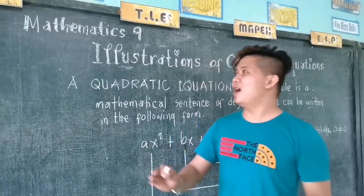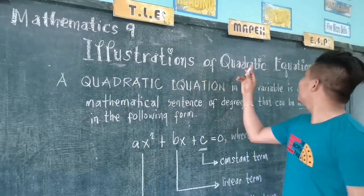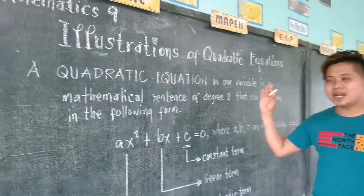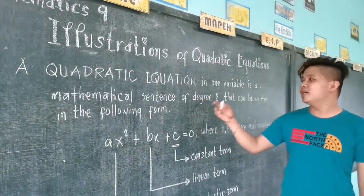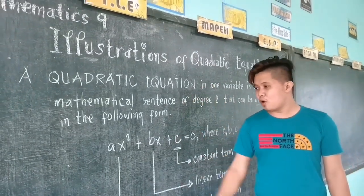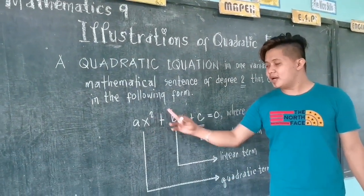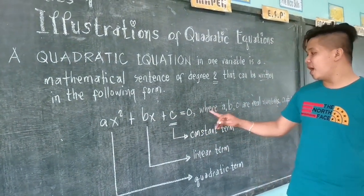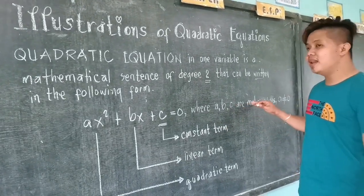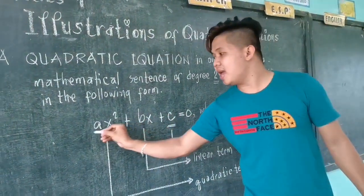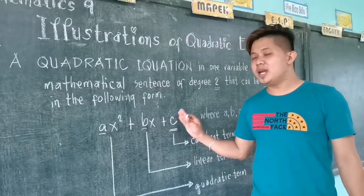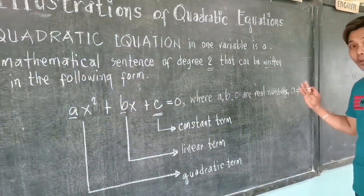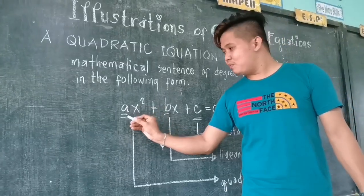Our topic today is all about illustrations of quadratic equations. A quadratic equation in one variable is a mathematical sentence of degree 2 that can be written in the form ax squared plus bx plus c equals zero, where a, b, and c are real numbers.